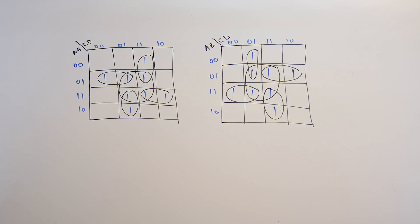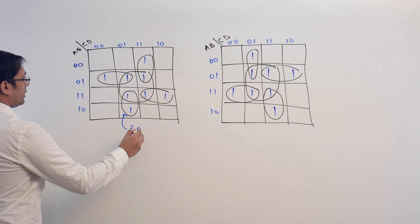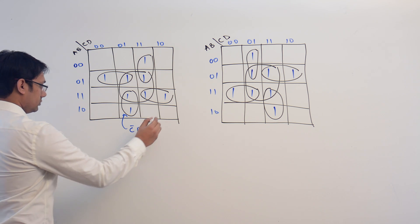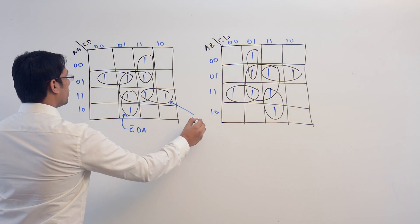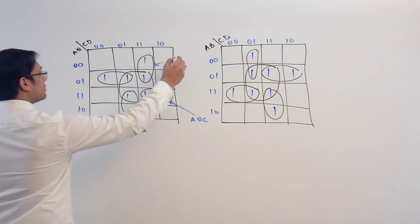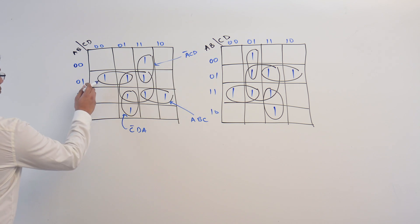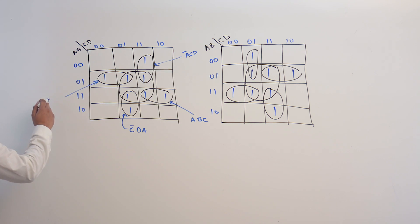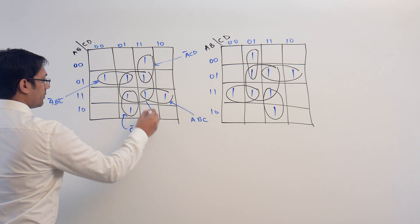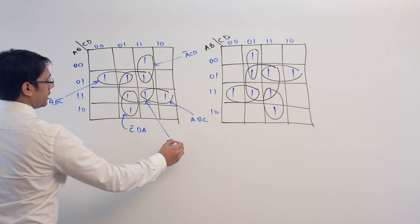What are these subcubes representing? Here, this subcube is representing C complement, D, and A. This subcube is representing A, B, C. This subcube is representing A complement, B, C complement. And the biggest one is representing B and D.